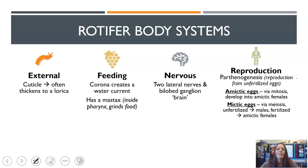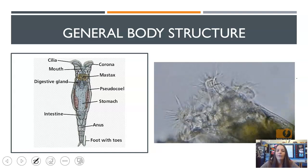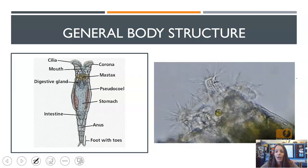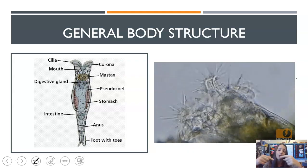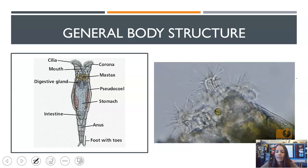There are two different kinds of eggs to be aware of. Amictic eggs are produced via mitosis, so they're clones — asexual — and they develop into more amictic females. Mictic eggs, on the other hand, are produced via meiosis: if unfertilized, they still turn into males; if fertilized, they turn into more amictic females. This is why there tend to be a lot more females than males in a rotifer population. You can see in the body structure diagram all those little cilia moving on the corona, bringing food into the rotifer.